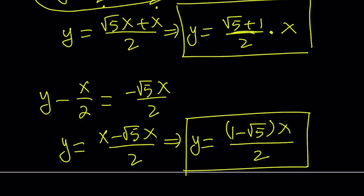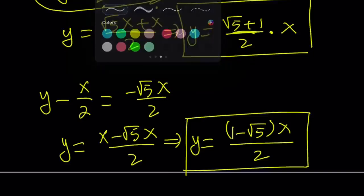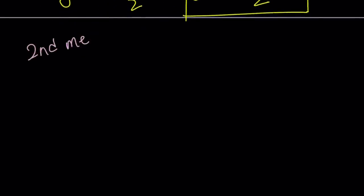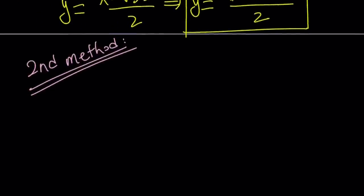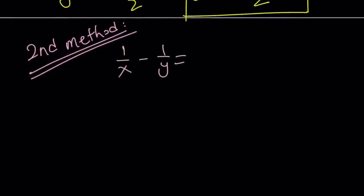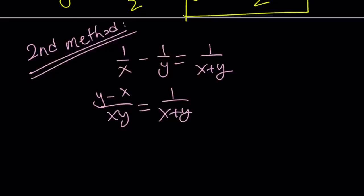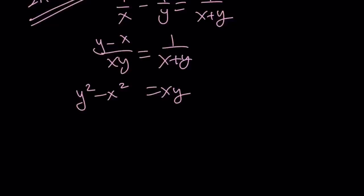At the end I'm going to show you a graph of what is going on. Let's talk about the second method. We'll write the original equation one more time: 1 over x minus 1 over y equals 1 over x plus y. From here you get y minus x over xy equals 1 over x plus y. Cross multiplication gives y squared minus x squared equals xy. Now for my second method I want to use the quadratic formula, turning this into a quadratic equation in a single variable.